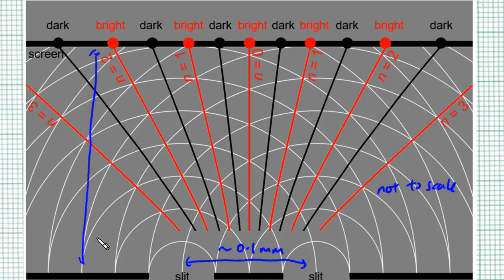This is typically easily 1 meter. So the screen distance is typically thousands, if not tens of thousands of times larger than the slit separation.